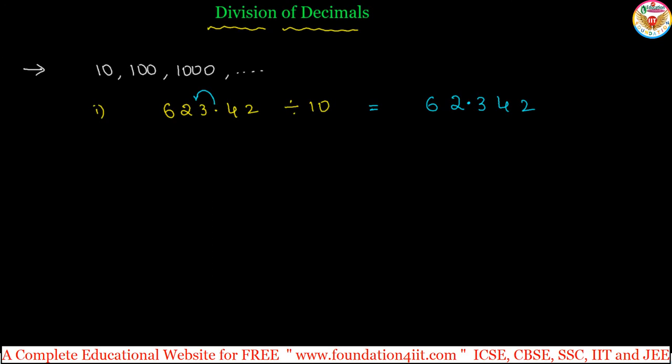See one more example. Same number 623.42 if it is divided by 100. In this case, this decimal place shifts two places because of division with 100. So that is 6.2342. The number of zeros - that many places this point should shift to the left side.